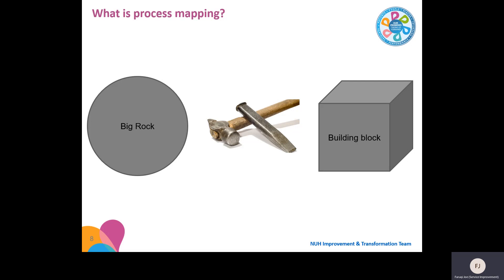So let's start with: what is a process? A process is anything really that you do. So an example you can see here — if you take a big rock, you might have a process of sculpting in order to turn it into a building block. In terms of the hospital, the input wouldn't be a big rock; it would be more likely to be one of our patients, or it may just be information or blood samples.